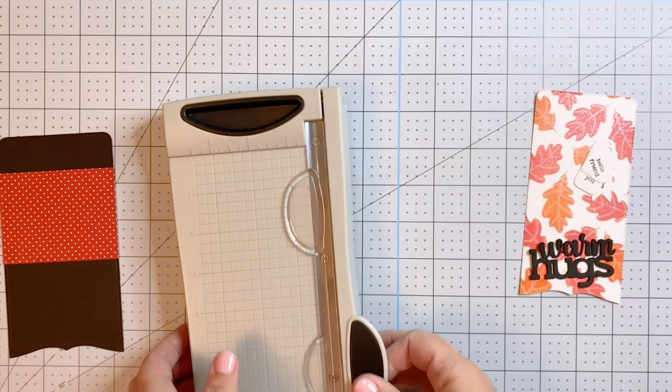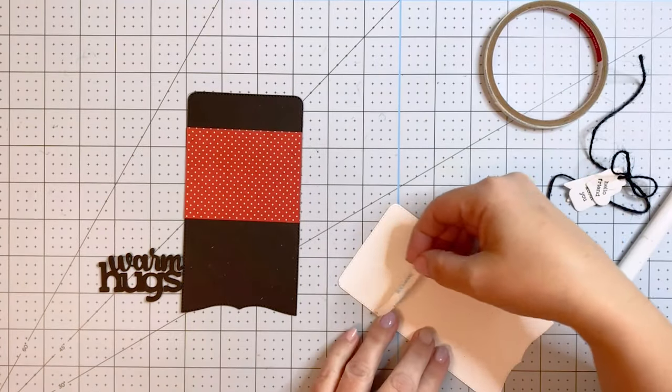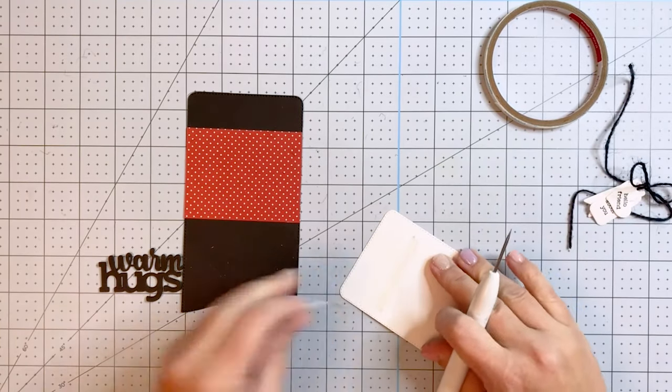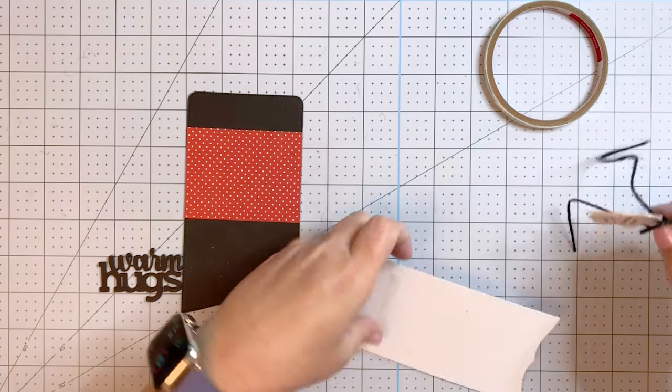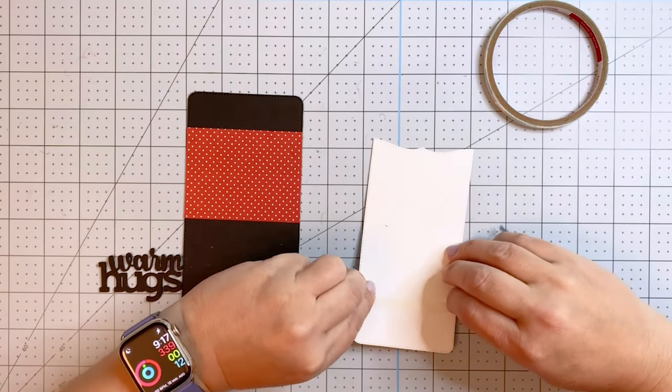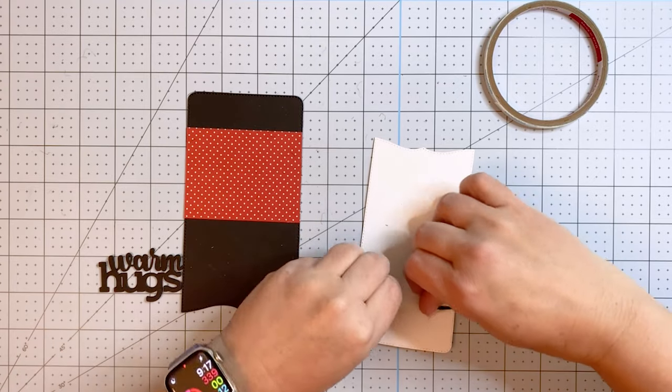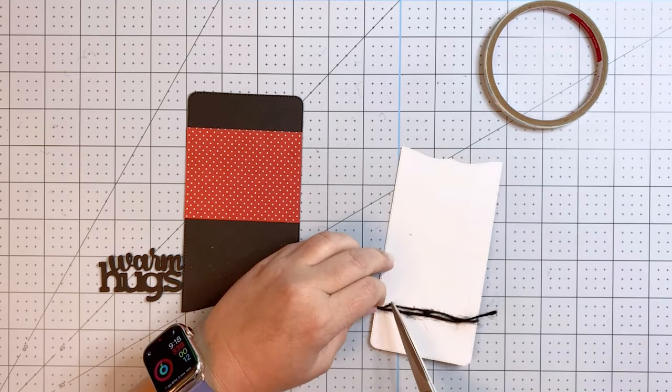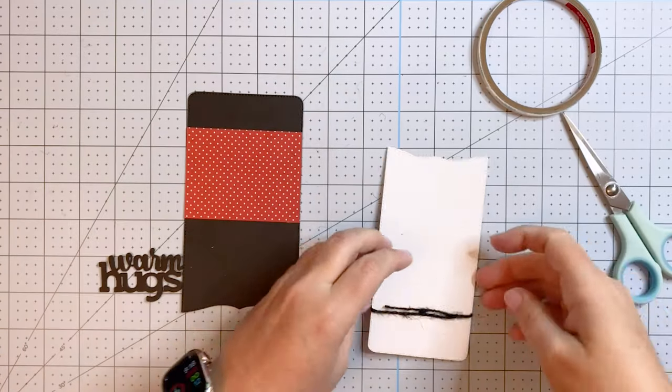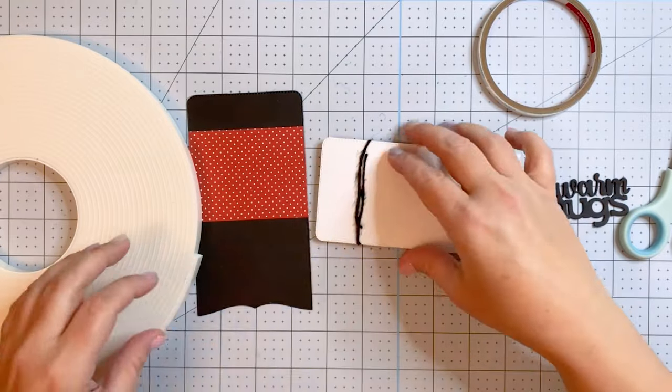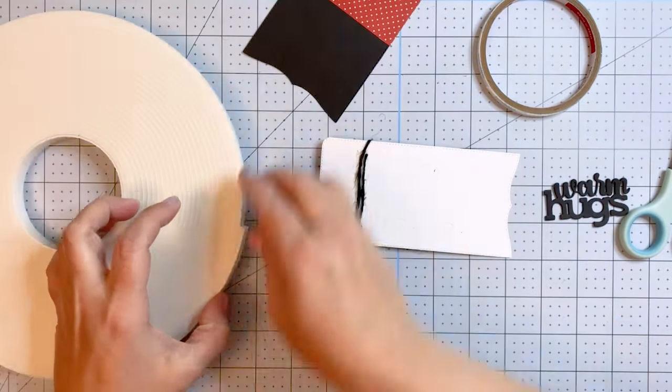So once I get that trimmed down, I can go ahead and add the string to my card. I have some black jute here that I'm using. I'm using some double-sided tape, so that'll help me secure everything and make sure I get my bow on there nice and straight. I've tied my bow and I've added my little charm tags on there, wrapped it around on the back and secured it to that double-sided adhesive.